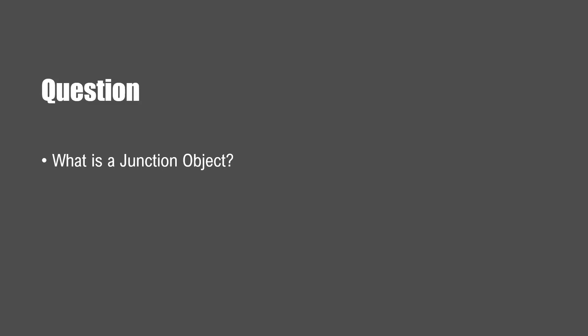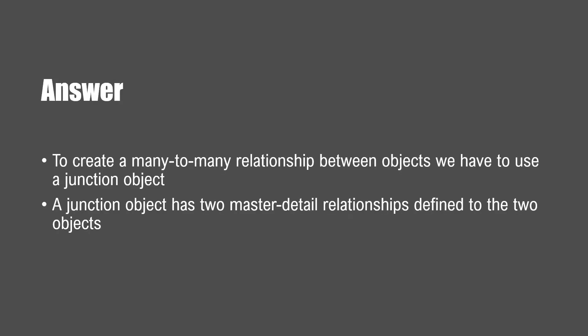What is a junction object? To create a many-to-many relationship between objects we have to use a junction object. A junction object has two master detail relationships defined to two objects.